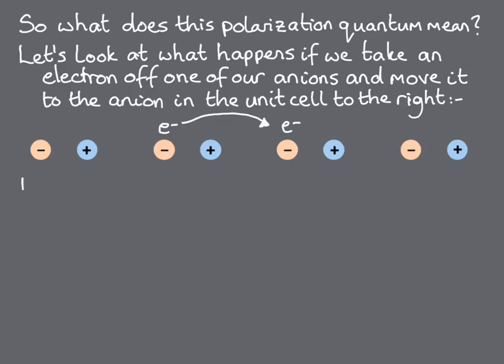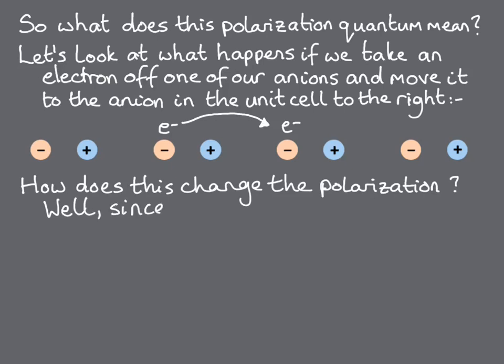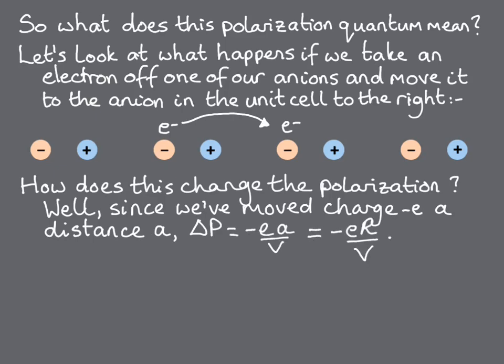How does this change the polarisation? Well, since we've moved a charge of minus E over a distance A, the change in polarisation is charge times distance over volume, which is minus E times A over V, or minus E times the lattice vector over V.